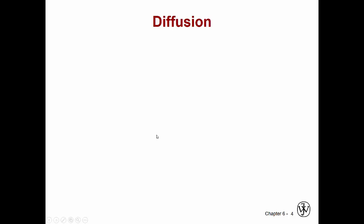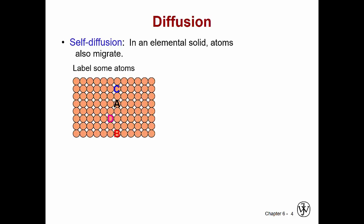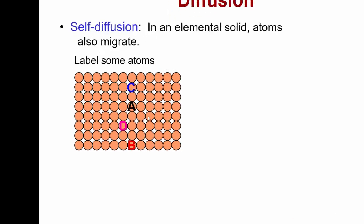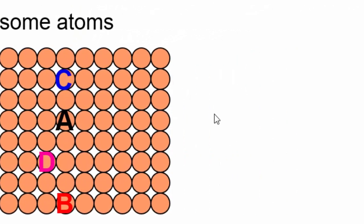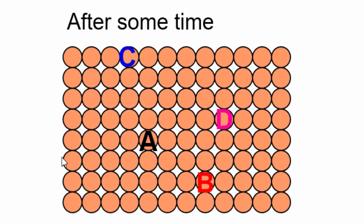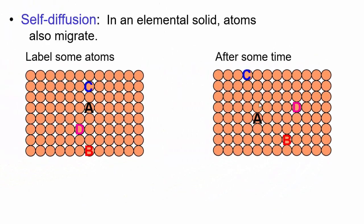In solids, there is something called self-diffusion. You actually have the atoms of a solid moving around within the solid. If you think about this as maybe some carbon, and you labeled some atoms, over time, they would actually move. So, A has moved over here, D has moved over here, B hasn't moved very far, and C has moved over here. Again, this isn't all that exciting, but it does happen.